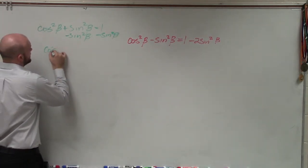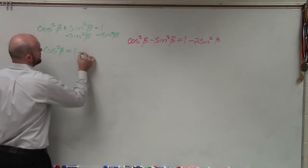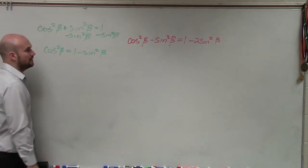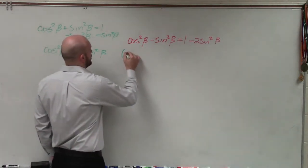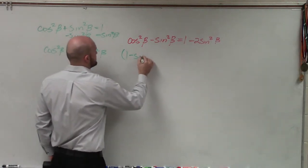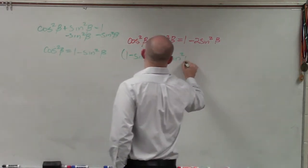Therefore, cosine squared of beta equals 1 minus sine squared of beta. Now I'll plug this in: cosine squared of beta minus sine squared of beta equals 1 minus sine squared of beta minus sine squared of beta.